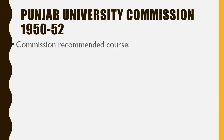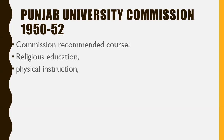The Punjab University commission was established in 1952, and recommendations were made regarding the groups of subjects to be included. Languages covered Persian, Arabic, French, German, Latin, and Urdu. History, geography, and elementary civics were included, as well as natural sciences — physics, chemistry, biology, psychology, and domestic science — along with algebra, mathematics, geometry, drawing, arts, and music.